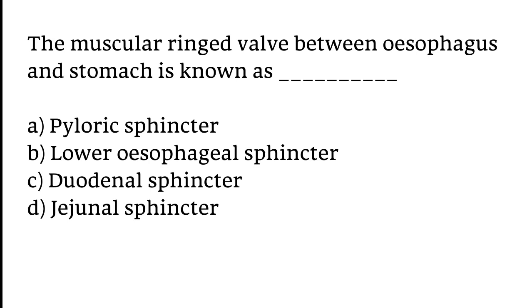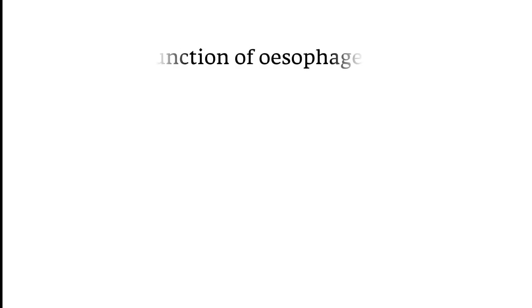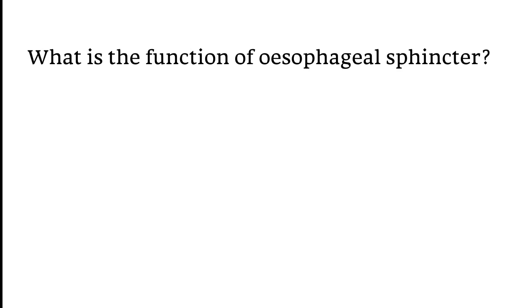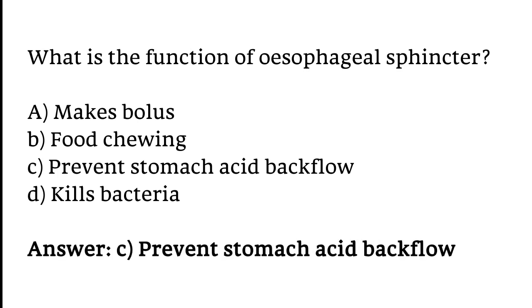The correct answer is option B. The muscular ringed valve between the esophagus and stomach is known as the esophageal sphincter. The function of the esophageal sphincter is to prevent stomach acid backflow.